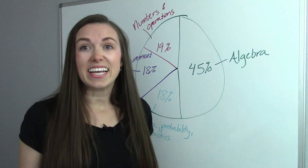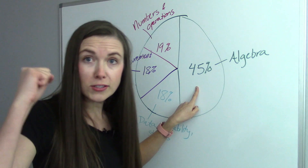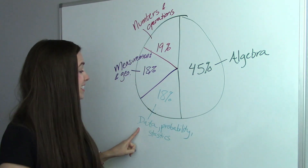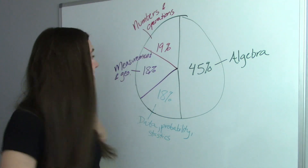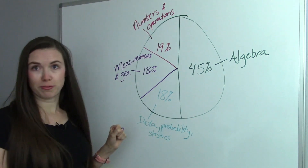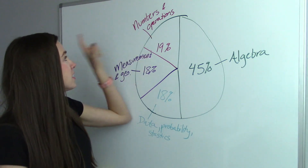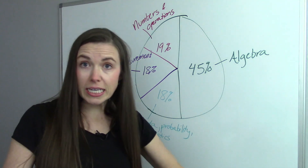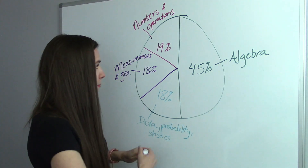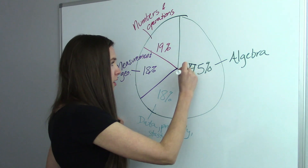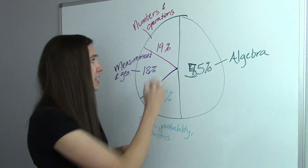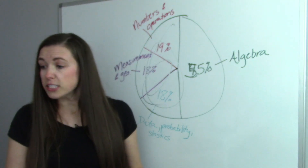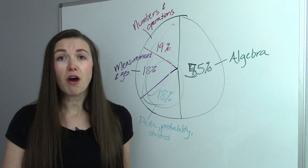For the HiSET test, 45% is algebra, 18% is data, probability, and statistics, 18% is measurements and geometry, and 19% is numbers and operations. The GED is pretty similar, except algebra goes up to 55%, and the remaining 45% — which covers the rest of those topics — is called quantitative problem solving.